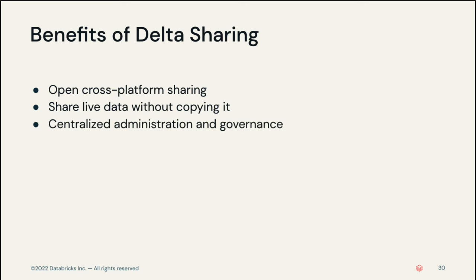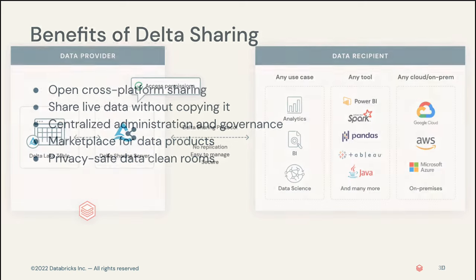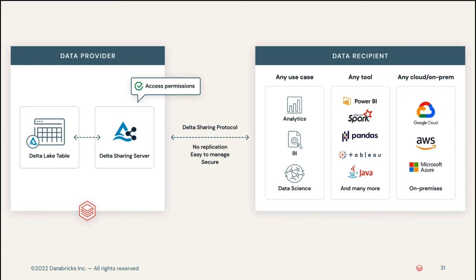Key benefits of Delta Sharing include that it is an open cross-platform sharing tool, easily allowing you to share existing data in Delta Lake and Apache Parquet formats without establishing new ingestion processes, since it provides native integration with Power BI, Tableau, Spark, Pandas, and Java. Data is shared live without copying it, maintained on the provider's data lake, ensuring datasets are reliable in real-time. Delta Sharing provides centralized administration and governance to the data provider, with data governed, tracked, and audited from a single location. You can build and package data products through a central marketplace, and it features privacy-safe data clean rooms for secure collaboration. Unity Catalog natively supports Delta Sharing, making these two tools smart choices in your governance and security structure.